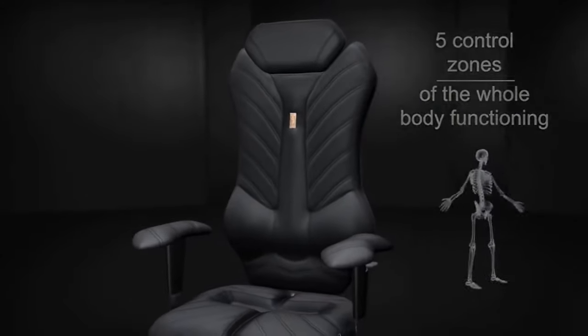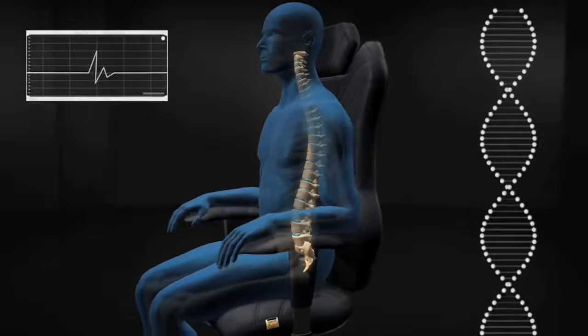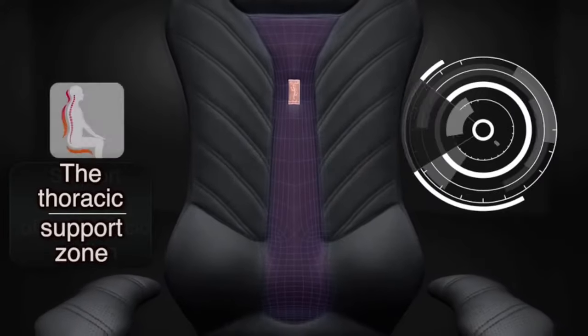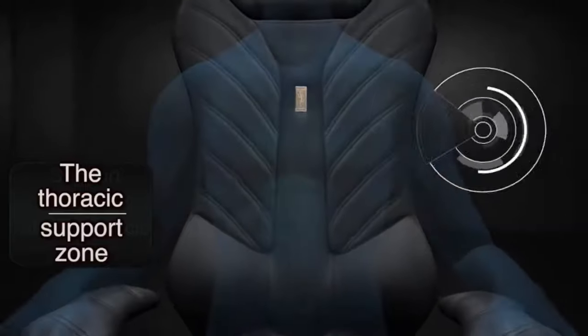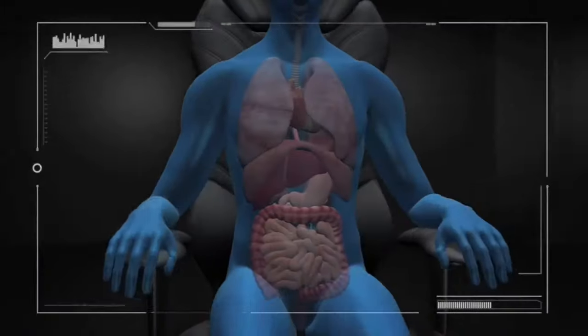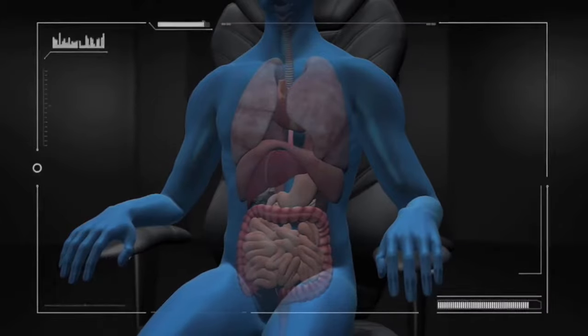The thoracic support zone allows you to breathe in full breast, which will influence the thought process and efficiency so you can easily cope with any task. The lumbar support will reduce the burden on your spine and positively affect the work of the body and your convenience.